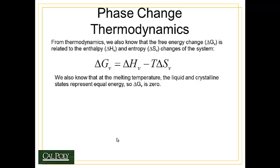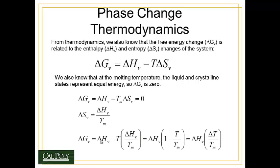From thermodynamics, we also know that the free energy change of the volume is related to the enthalpy and entropy change of the system. We also know that at the melting temperature, the liquid and crystalline states represent equal energy, so ΔGv is zero. If ΔGv is zero, we can solve for the entropy change of the system, and that's equal to the change in enthalpy divided by the melting temperature.